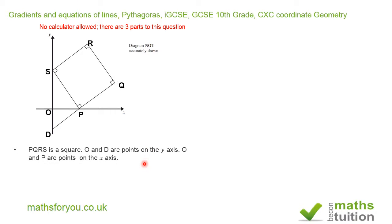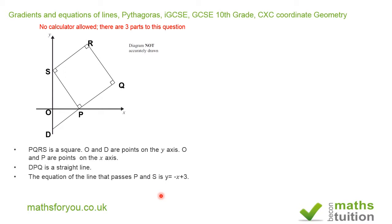PQRS is a square. O and D are points on the y-axis. O and B are points on the x-axis. DPQ is a straight line. The equation of the line that passes through P and S is y = -x + 3, or equivalently y = 3 - x.